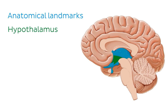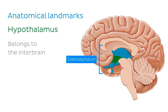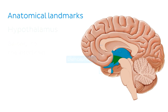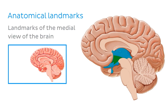First of all, we should point out that we're looking at a mid-sagittal section of the brain with the hypothalamus highlighted in green. It belongs to a greater region of the brain known as the diencephalon, or the interbrain, which is highlighted in a different color. For those of you who may be unfamiliar with the major landmarks of the medial view of the brain, we're going to present the most important ones here, but if you'd like a more thorough understanding, you might like to watch our video on the medial view of the brain.